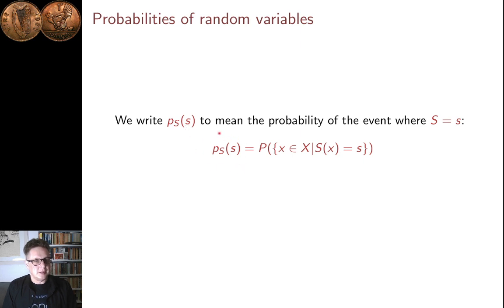So that probability is supposed to be read as the probability of the event where big S is equal to little s. So this probability here, the probability p_S(s), so I'm using little p here, this is the notation that's often used. It corresponds to the probability, the original thing defined on the probability space of the event. And as I said, this event is the event where s is the value of the outcome, or this event composed of all the outcomes that map to little s under the random variable big S.